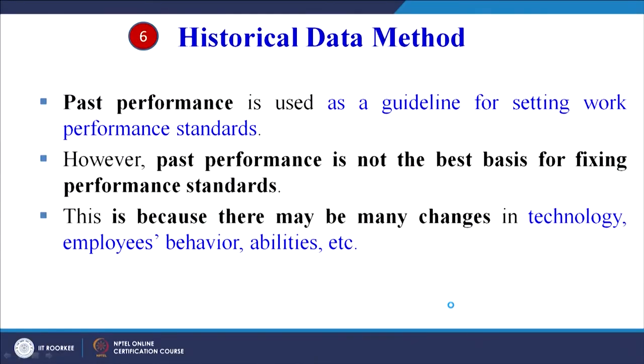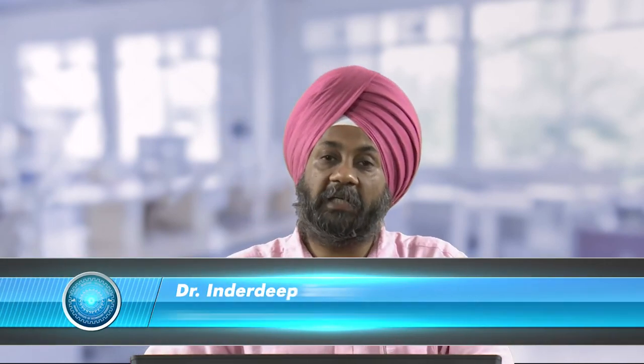The historical data method uses past performance as a guideline for setting work performance standards in terms of time. However, past performance is not always the best basis for standards, since there may be changes in technology, employee behaviour, and abilities. Where objectivity can be established and not many changes have occurred, historical data can be directly used to set the standard time.